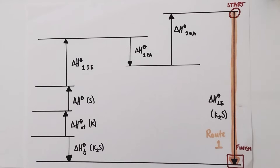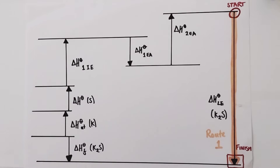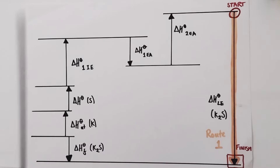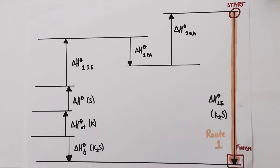So, as before, a Born-Haber Cycle is a thermochemical cycle used to calculate an unknown enthalpy change of interest. In this particular example, I want to know what the lattice enthalpy for the formation of potassium sulphide is. But I don't know that information. So instead, we're going to take an alternative route two, with many other enthalpy changes included, to discover route one via Hess's law.